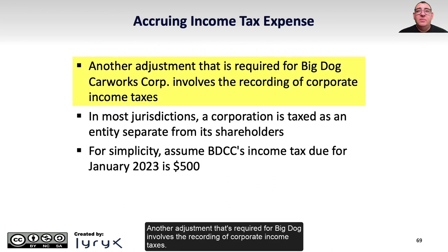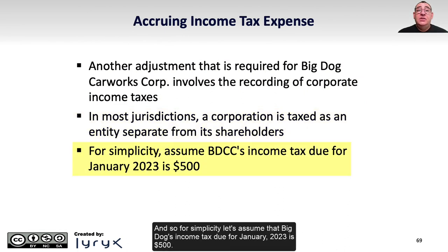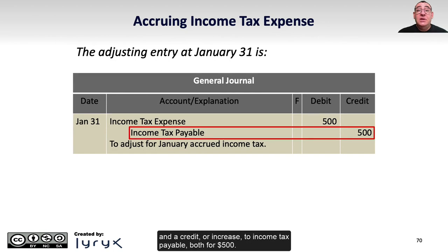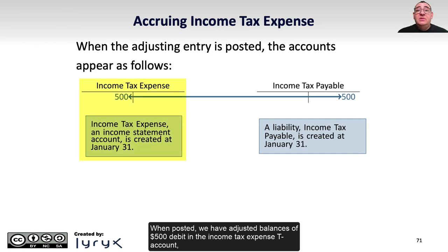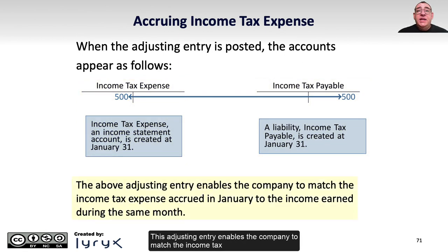Another required adjustment for Big Dog involves corporate income taxes. In most jurisdictions, a corporation is taxed as a separate entity from its shareholders. Assuming Big Dog's income tax due for January 2023 is $500, we record a debit or increase to income tax expense and a credit or increase to income tax payable, both for $500. This adjusting entry matches the income tax expense accrued in January to the income earned during the same month.